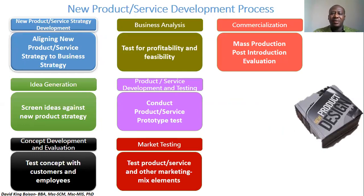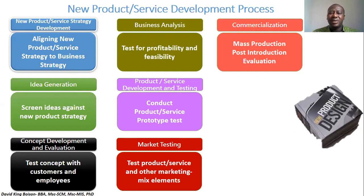For a new product or service to be developed, there are seven stages the organization must go through. The first stage, which we have briefly discussed, is the new product or service development strategy. At that stage, the organization tries to align the new product or service strategy to a business strategy.